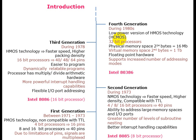The fourth generation, during the 1980s, uses low-power CMOS technology — a 32-bit microprocessor with physical memory space of 2 to the power 24 bytes, or 16 MB, and virtual memory space of 2 to the power 40 bytes, equal to one terabyte. It has floating point hardware support and increased number of addressing modes. Intel 80286 is the fourth generation microprocessor.